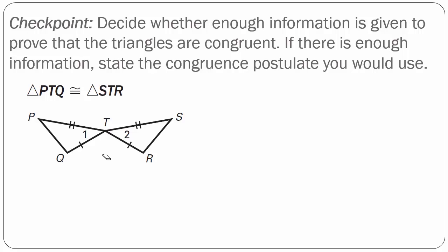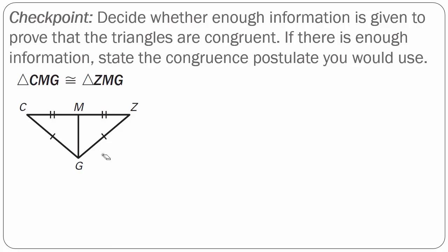Checkpoint problems number two and three are yours. For each problem, decide whether enough information is given to prove that the triangles are congruent, and if so, state the congruence postulate. In problem two, prove triangle PTQ is congruent to triangle STR. In problem three, prove triangle CMG is congruent to triangle ZMG. Remember, you need at least three pieces of information — either all sides congruent (SSS), or two sides and the included angle congruent (SAS). That's it from me — I'll see you all soon.